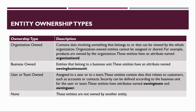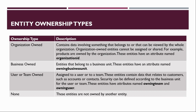Let us now see the different entity ownership types. The first type is called organization owned — it contains data that belongs to or can be viewed by the whole organization. Organization owned entities cannot be assigned or shared. For example, the product entity is organization owned, and these entities have an attribute named organization ID. The next type is business unit owned, meaning entities that belong to a business unit. These entities have an attribute named owing business unit.